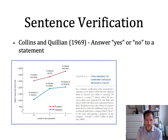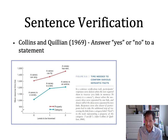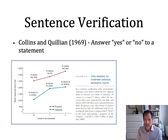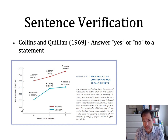But you don't normally think of that as a property of a canary. What they're suggesting is that there's a reason for that — you don't store that information with your representation of canaries. In fact, you store having skin with your knowledge about animals. And they suggested that these increasing reaction times to say yes or no to more distant properties can be captured in a hierarchical system.